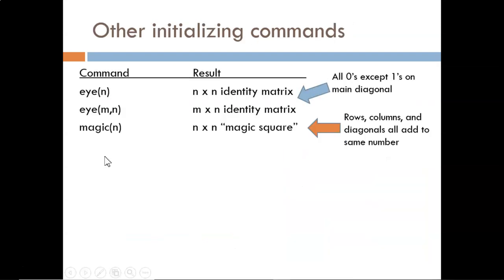Two other initializing commands are shown on this slide. The first is the eye command, which is short for identity matrix. This is a matrix that is all zeros, except for ones on the main diagonal, that is, moving from top left to bottom right.